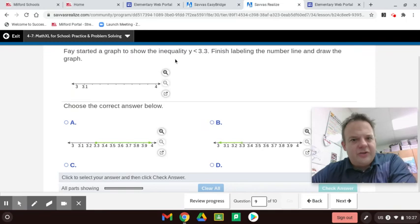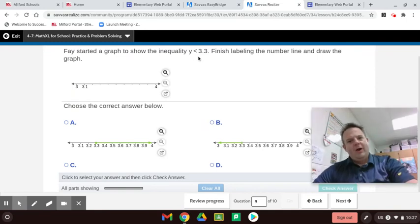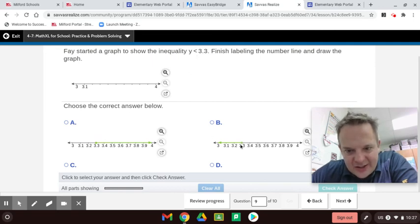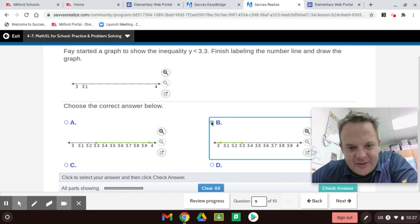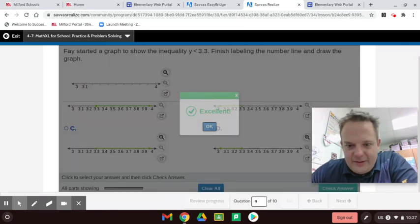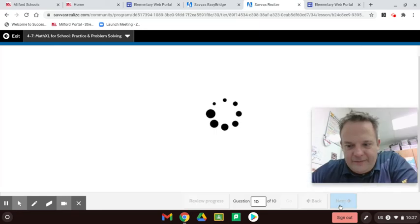Faye started a graph to show the inequality Y is less than 3.3. Finish labeling the number line and draw the graph. So, Y is less than 3.3. So, you see, we're going to use an open circle, not a closed circle. And, it's going to go less than. Do you see how that one is? This was greater than or equal to 3.3. This one is greater than 3.3. And, this one is less than or equal to 3.3.